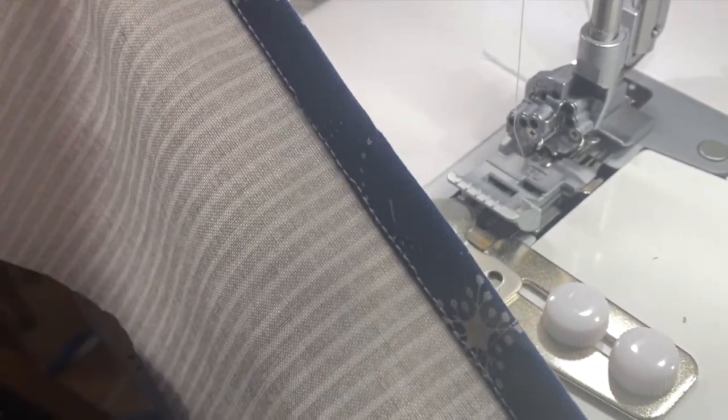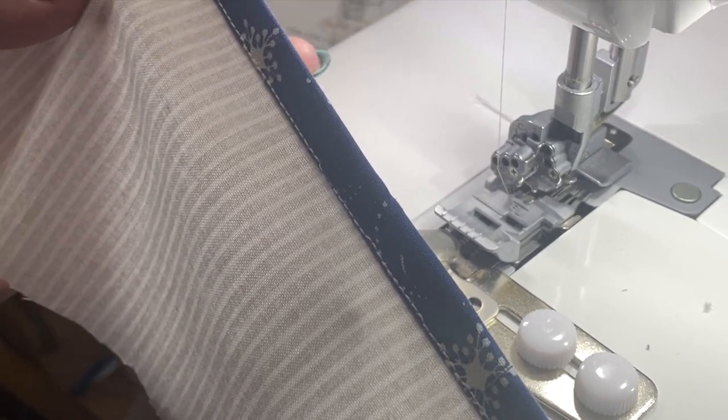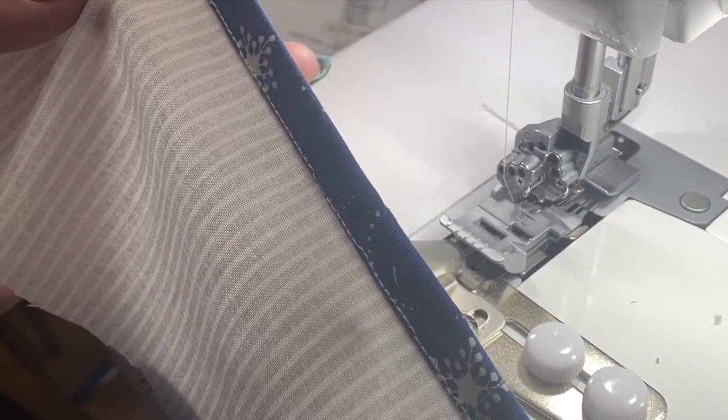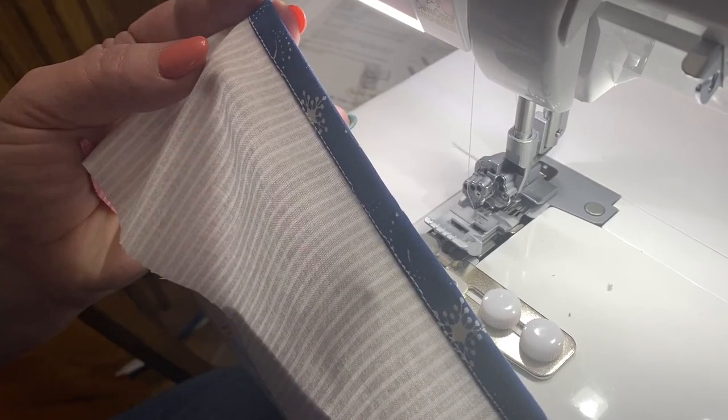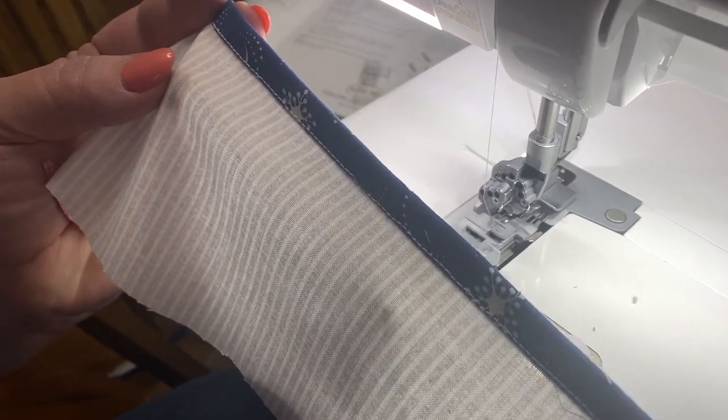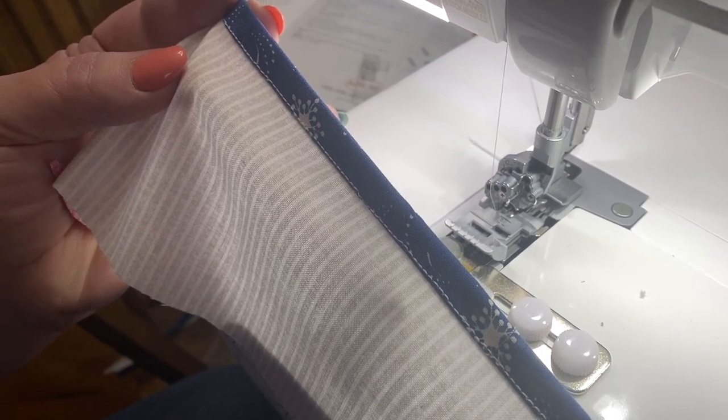And this is a great application for things like a tree skirt or a round thing. This is not going to be a great way to bind your quilt because it's hard to get the mitered corners on there. Or it might be a good application for a bag where you're just adding a binding to a pocket or to the top of the bag.